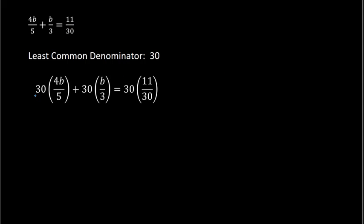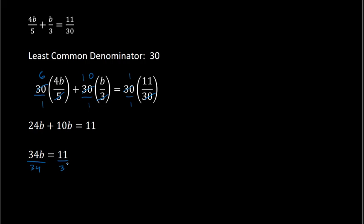For the first term, 30 and 5 divide out to give me 6. Second term, 30 and 3 divide to give me 10. And on the other side, 30 divided by 30 gives me 1. So I have 6 times 4b, which is 24b, plus 10 times b, which is 10b, equals 1 times 11, which is 11. We have 34b on the left, and dividing both sides by 34 gives me b equals 11 over 34.